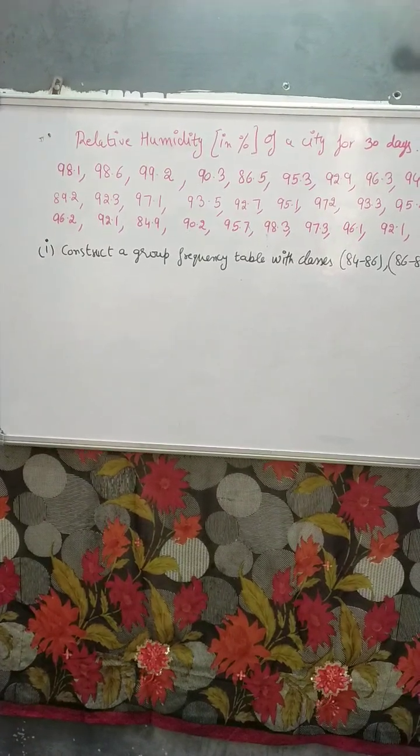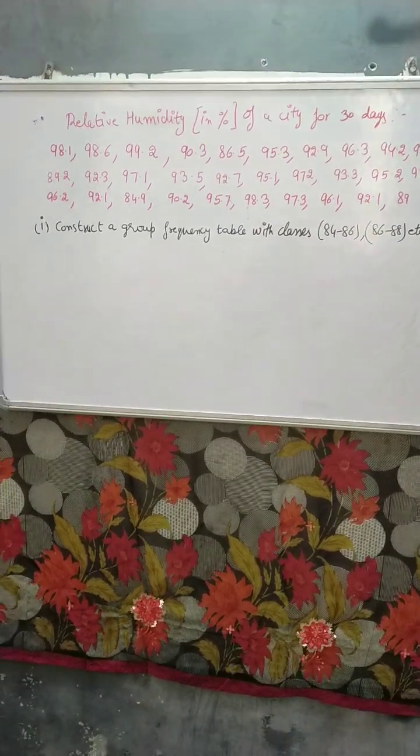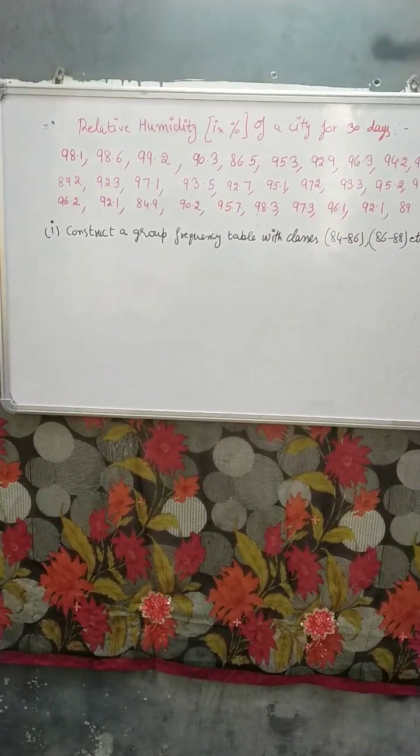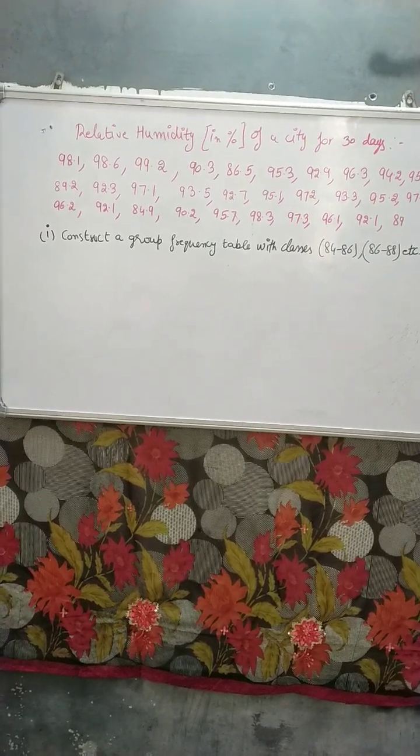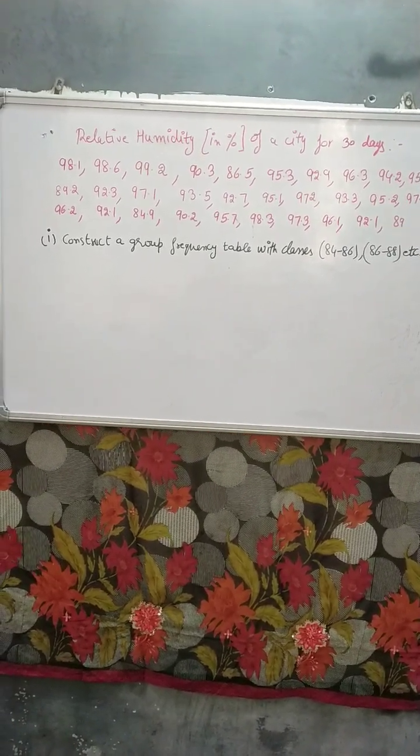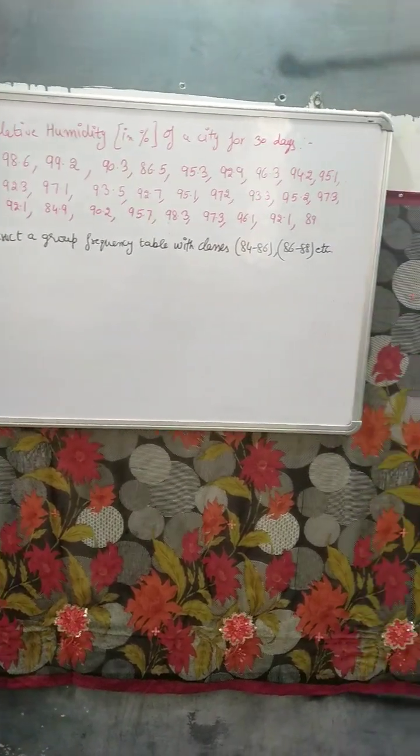We are given relative humidity in percentage of a city for 30 days. This is the statement: 98.1, 98.6. This is the humidity in percentage. We have to construct a grouped frequency table with class intervals which are...